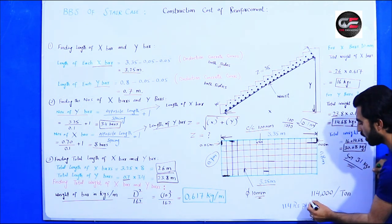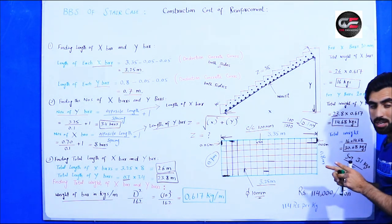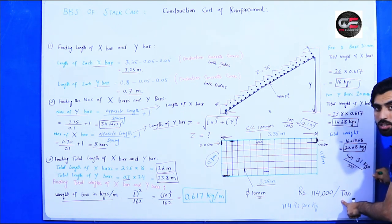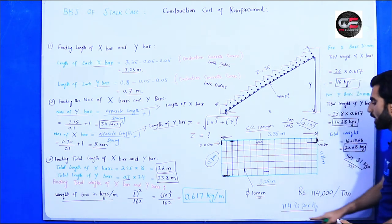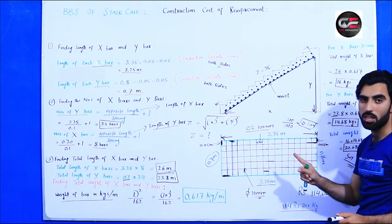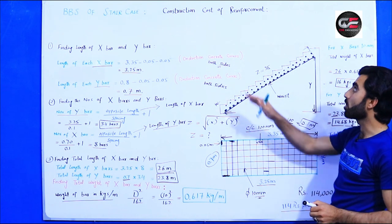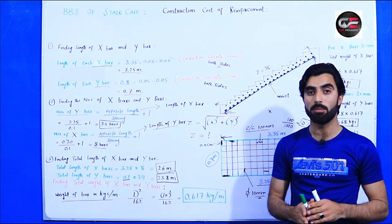Now the construction cost. Currently in Pakistan, the steel rate is 1,14,000 rupees per ton (1000 kg). Dividing: 1,14,000 ÷ 1000 = 114 rupees per kg. So total construction cost of reinforcement for this staircase: 31 kg × 114 rupees = approximately 3,534 rupees. This is the method to find the total quantity and cost of steel bar for a staircase.